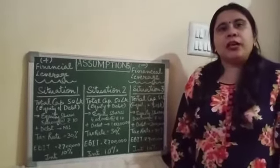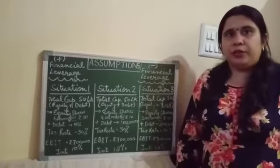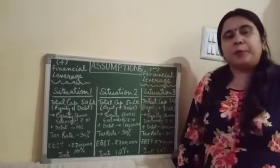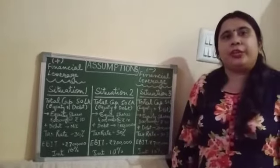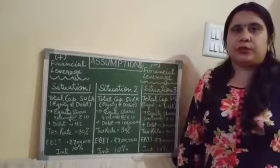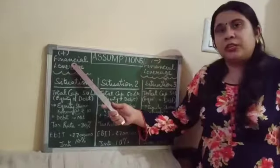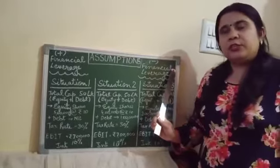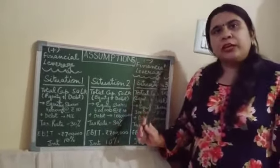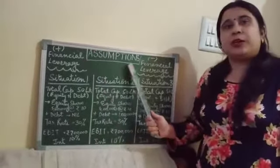In the previous module, I explained about the capital structure and financial leverage, which is the amount of debt in the capital structure. A capital structure is a combination of debt and equity — borrowed funds and owner's funds. Let us further understand what is positive financial leverage and negative financial leverage, which we will understand with the help of examples.